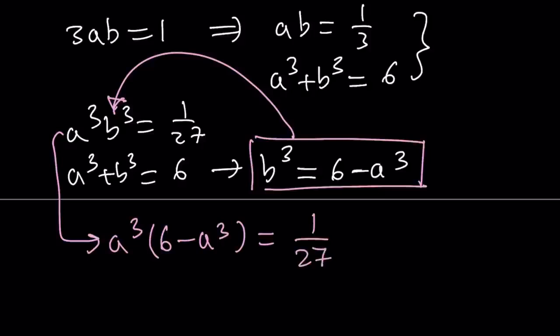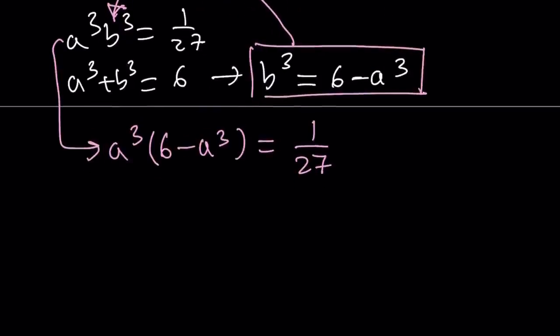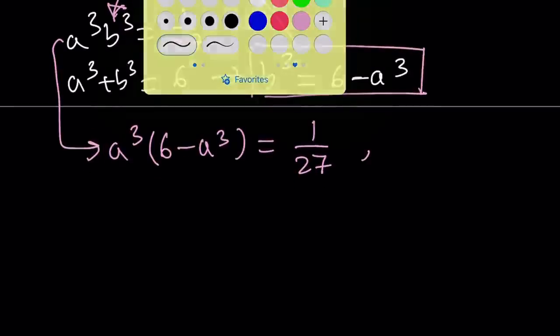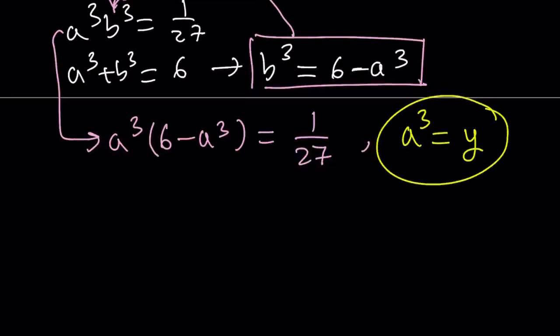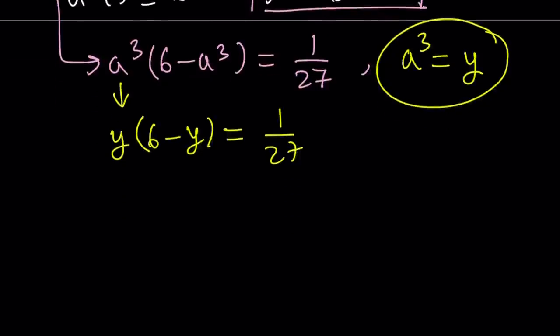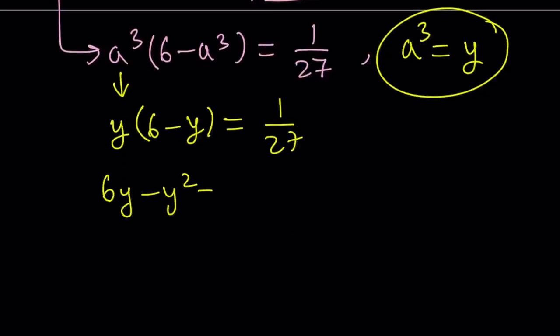So, a cubed times b cubed, b cubed, I'm going to replace with 6 minus a cubed. And, the product is equal to 1 over 27. So, this is, in fact, a quadratic equation. Even though it looks like 6 degree, it doesn't have anything besides the 6th power and the 3rd power. So, it can easily be turned into a quadratic equation by using substitution. So, I'm going to say a cubed, let's set it equal to y. So, suppose a cubed equals y.